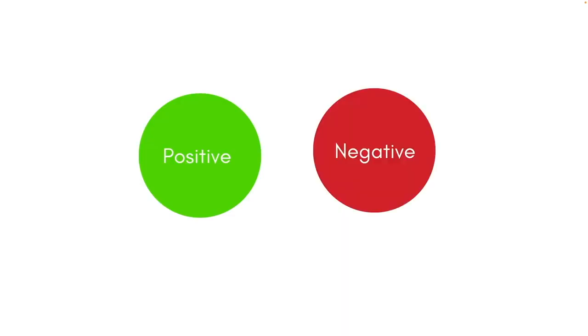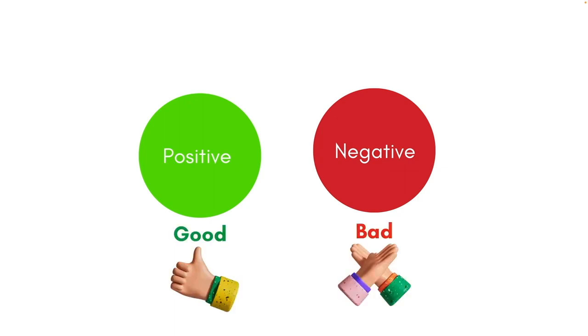In the context of the operant conditioning theory, we use many everyday terminologies such as the words positive and negative. In everyday context, the word positive could mean something good and negative as something bad. However, in the context of the operant conditioning theory, this is not what these words mean.